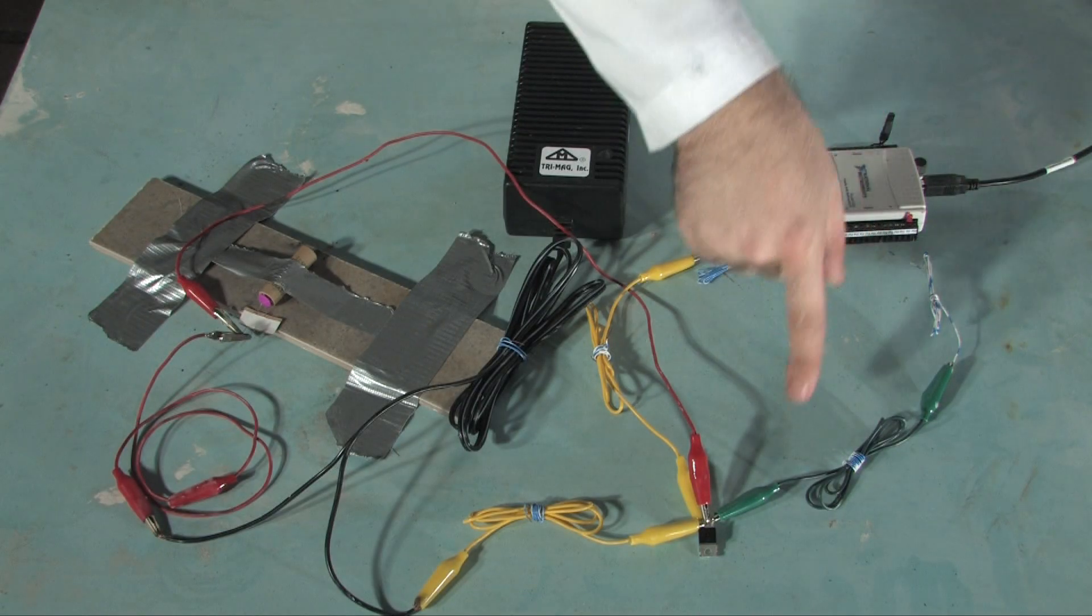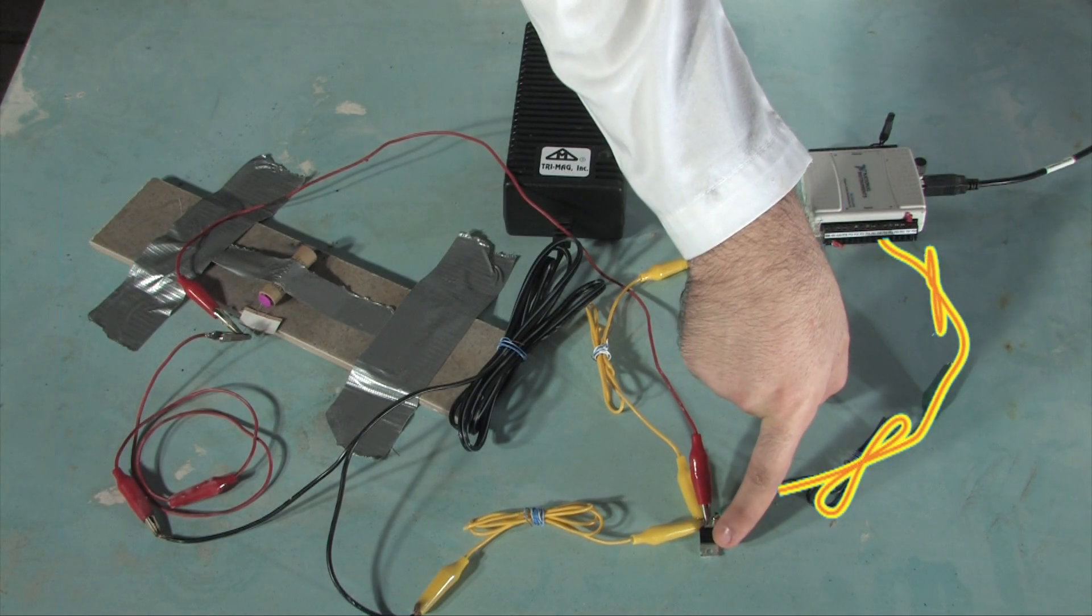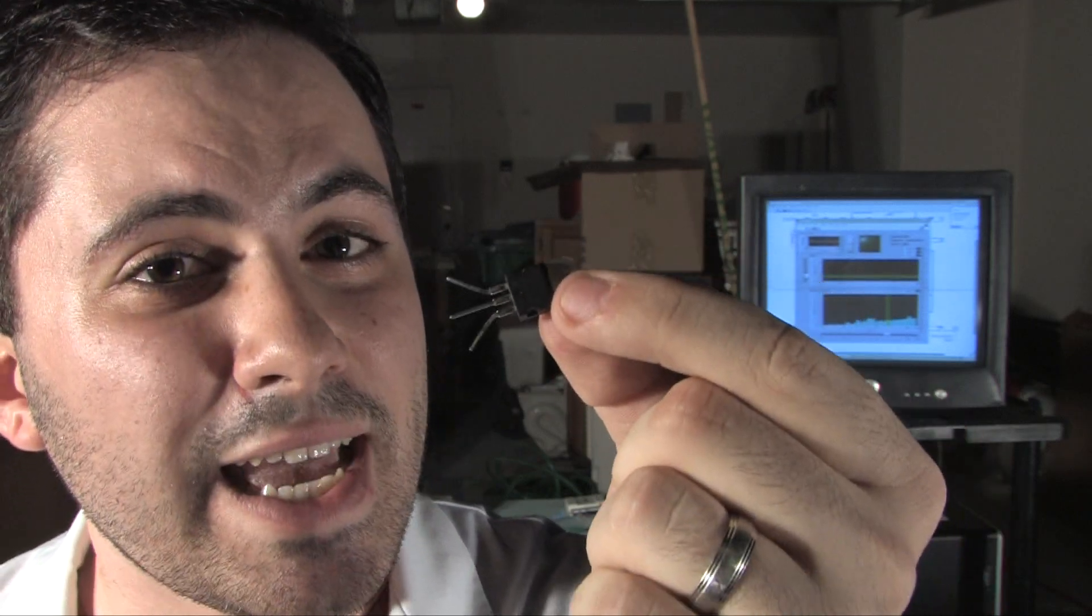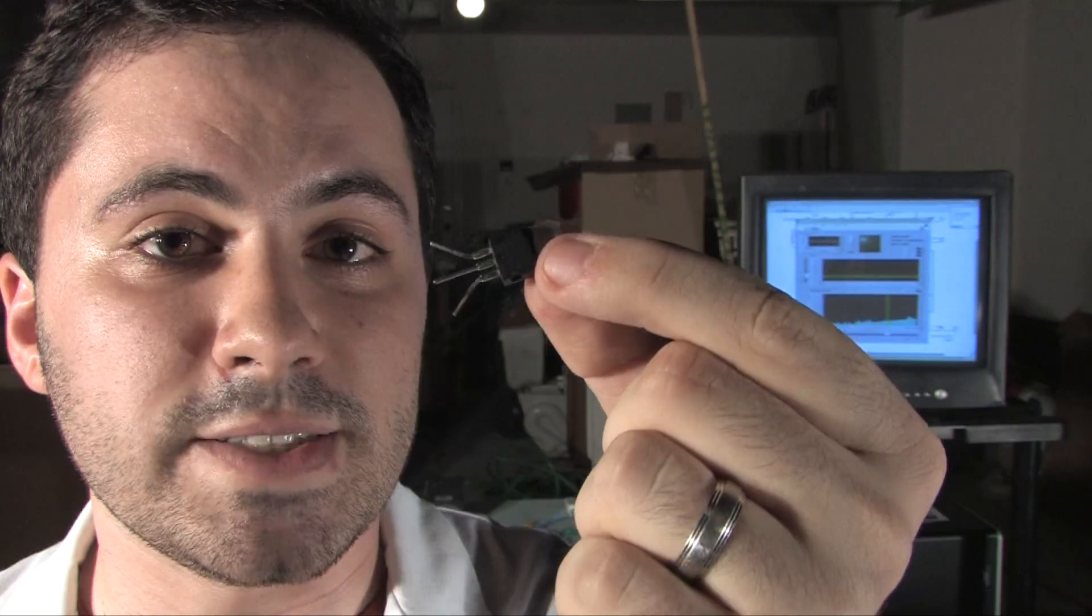The digital out goes to the base on our Darlington pair transistor. This is a TIP 120 Darlington pair transistor. It allows us to amplify the current coming out of the 6009 device so we can set off the firework. It works basically like any other transistor, but it has two transistors in series, so it amplifies the current even more than a regular transistor.